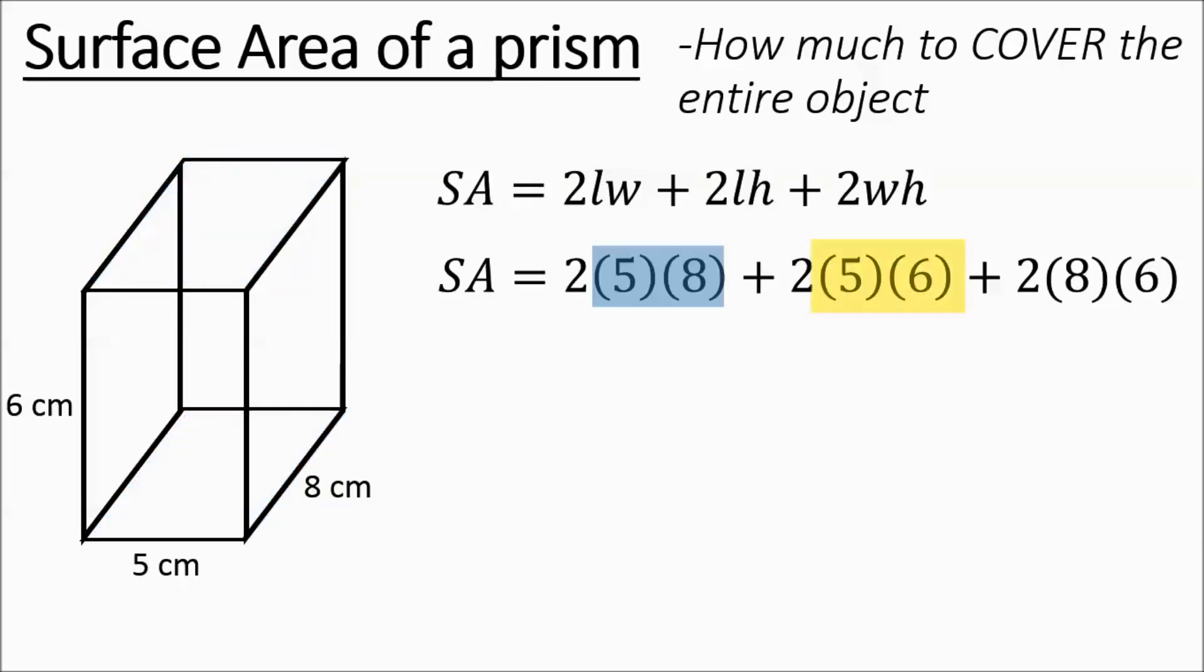So then we have a 5 by 6 rectangle. That's the front and back. Those are those two faces. And then we have the 8 by 6. Those are our side faces.